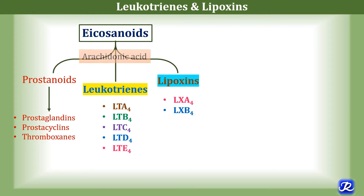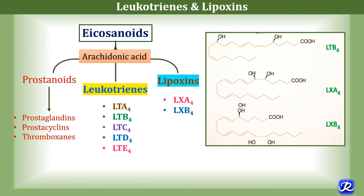All these eicosanoids are mainly derived from arachidonic acid. These leukotrienes and lipoxins are designated as 4 because they have 4 double bonds in their structure. If you look at the structure of leukotriene B4, you can see there are 4 double bonds — 1, 2, 3 and 4. Even in the structure of lipoxin A4 and lipoxin B4, you can see there are 4 double bonds. So, this 4 denotes the number of double bonds present.